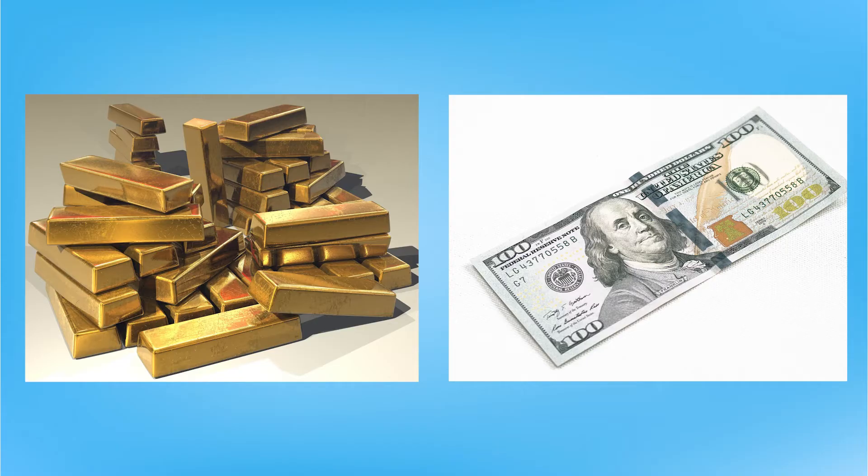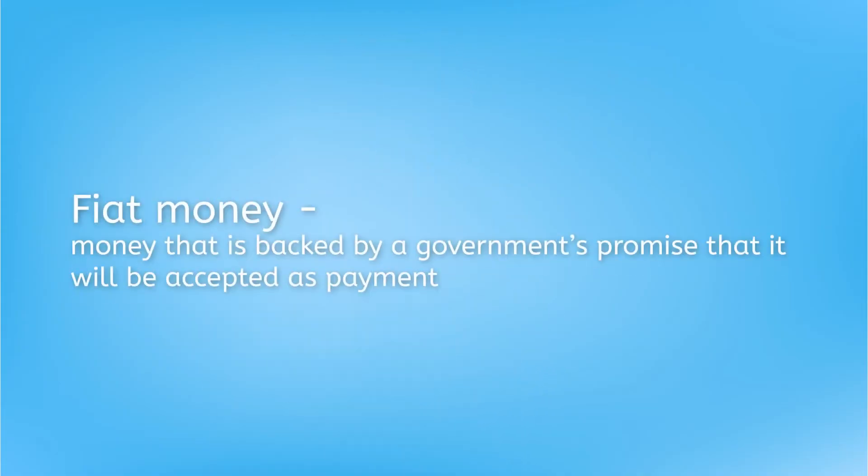This was known as the gold standard, and it ended in the 1970s. But wait — if money today doesn't represent gold, what does it represent? That's the thing: it no longer represents any physical commodity. Our money today is known as fiat money, meaning the only thing it represents is a promise — a promise by the government that it legally has to be accepted as payment.